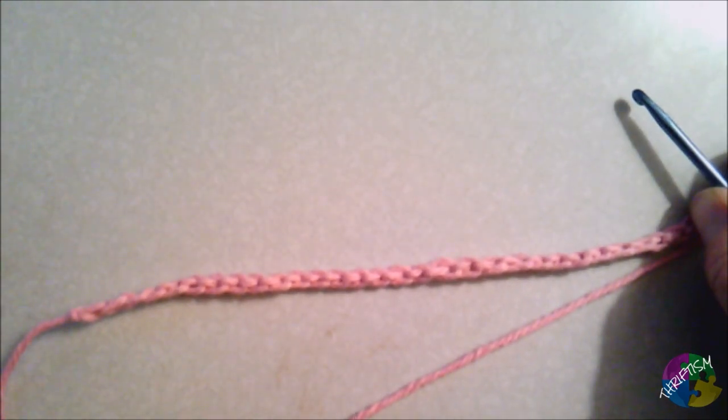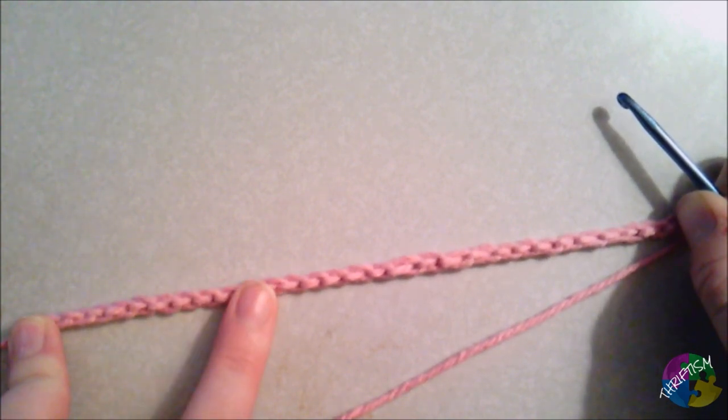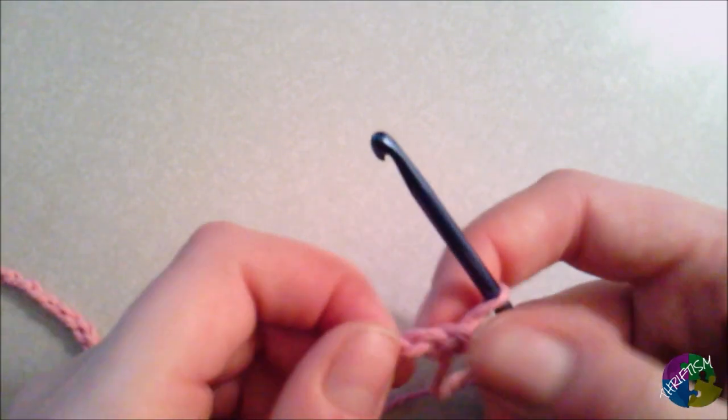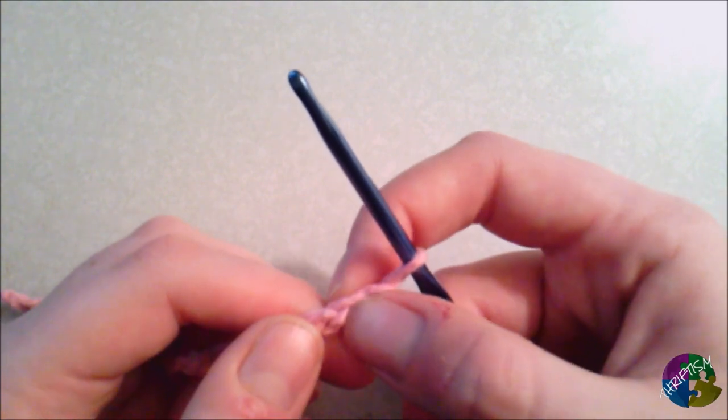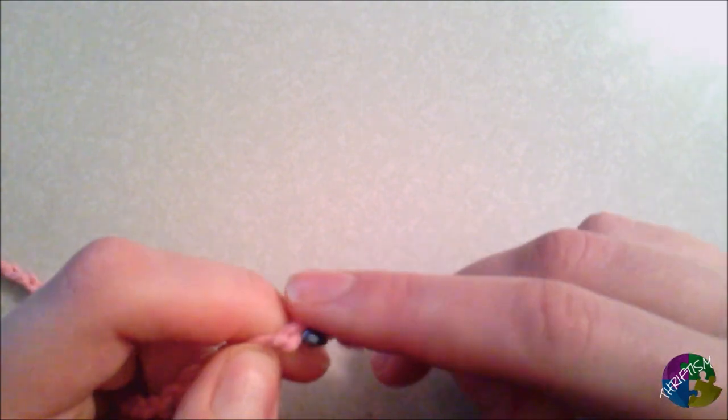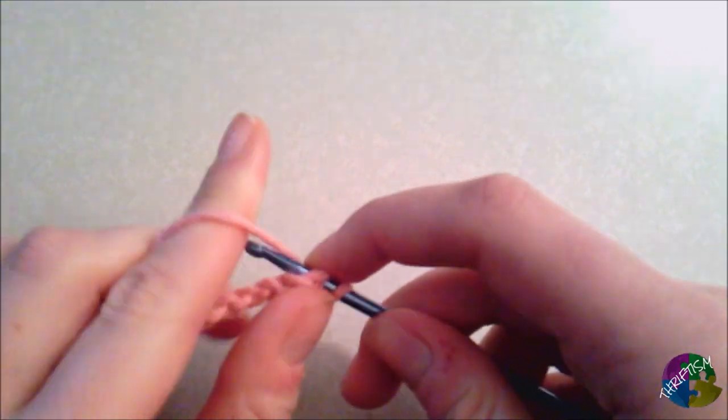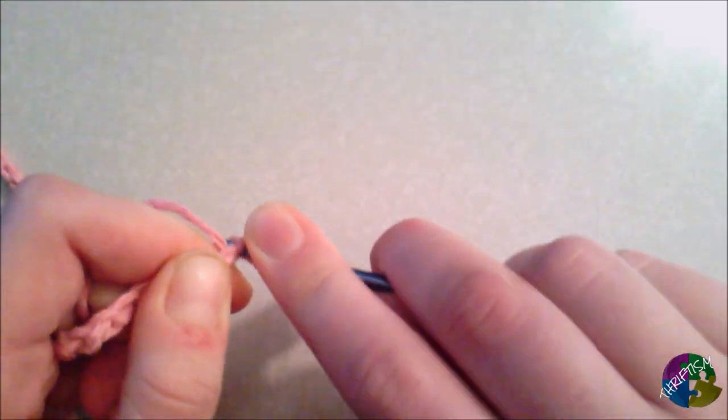So once you have that now, we can go ahead and begin our single crochets. So you can kind of see each one of these chains in here, so we're going to go ahead and not in this first one, but in the second one from the hook, you're going to go ahead and put your hook through that top loop and yarn over and then go ahead and pull that through.